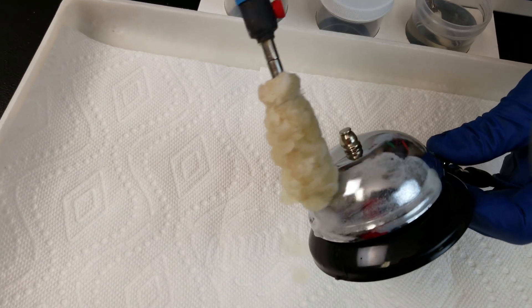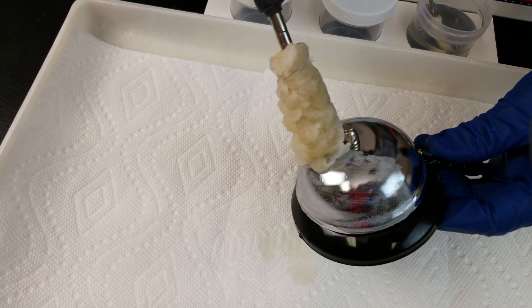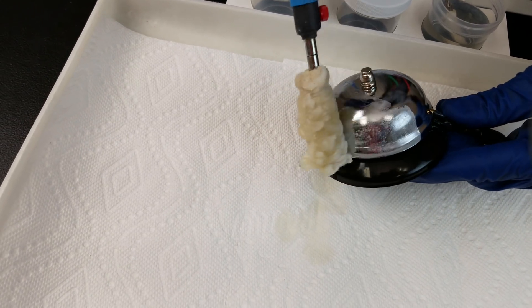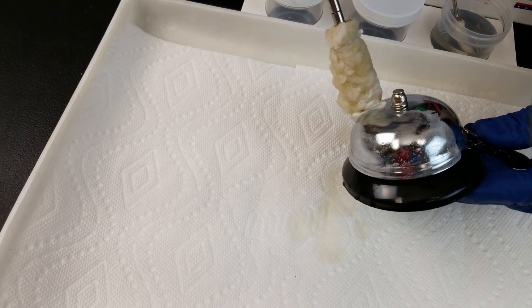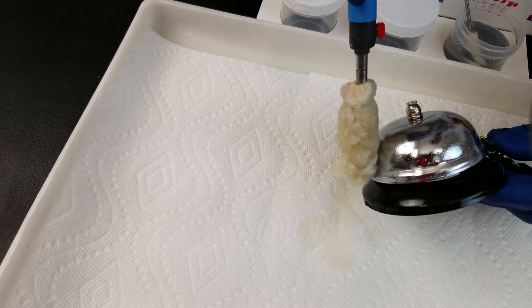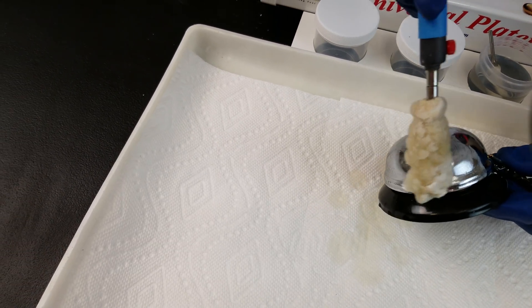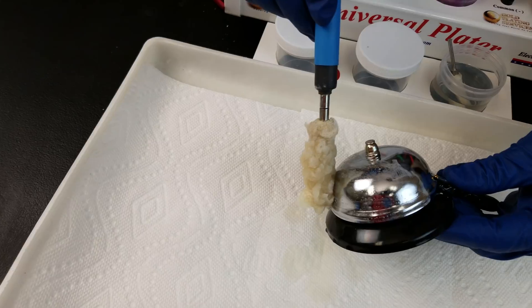So we're going to go ahead and Electro Clean it. I'm actually going to break this bell in half just to make it go smoother and increase the chances of getting a good job. If you try and do too big of an area in an odd shape like this all in one go, you can encounter some issues.